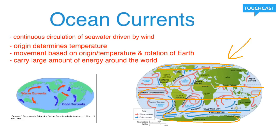You all know about convection and how warm fluids rise because they're less dense and cold fluids sink because they're more dense. The same is true for ocean currents. Warm ocean currents are less dense, so they're going to move up and away from the equator. Cold ocean currents are more dense, so they're going to sink down from the poles towards the equator. You'll also notice that they have a slight turn or bend, because the Earth rotates and because they have to turn once they hit continents.